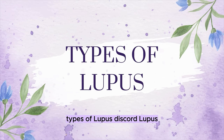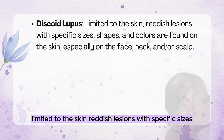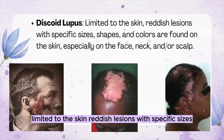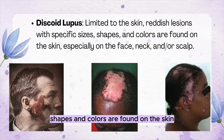Types of Lupus — Discoid Lupus: Limited to the skin. Reddish lesions with specific sizes, shapes, and colors are found on the skin, especially on the face, neck, and/or scalp.